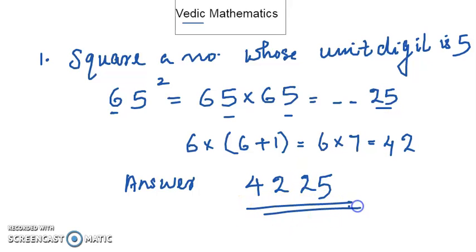The answer is 4,225. We can check if it's correct. 65 times 65, that is 4,225.